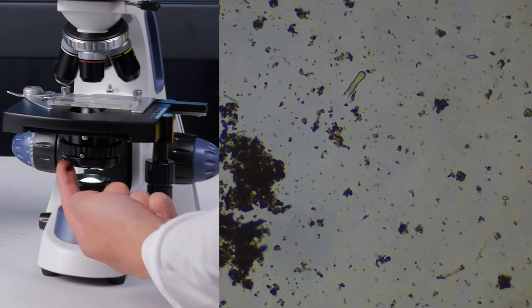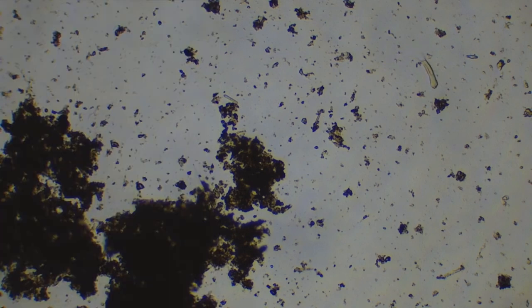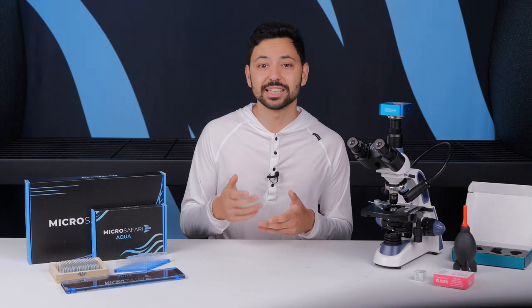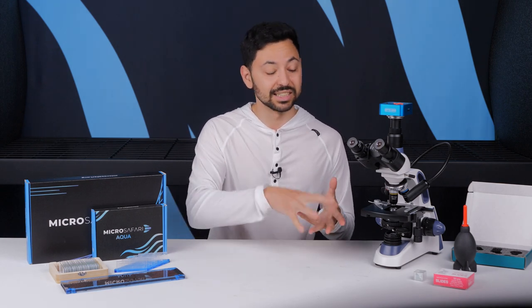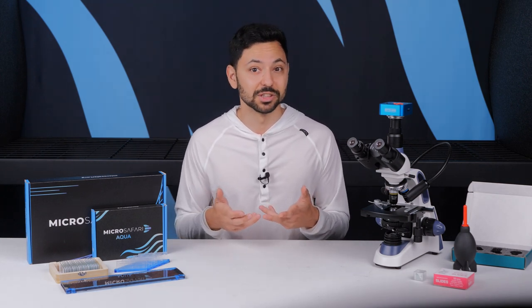As a rule of thumb having the condenser iris all the way closed will give the highest contrast. So for example if you're looking at a bacteria that's barely visible, closing down the condenser iris will make the edges of the bacteria much more visible. The downside is that closing the condenser iris will also make any dust that's inside of the microscope optical train appear much more visible. This also increases the depth of field.